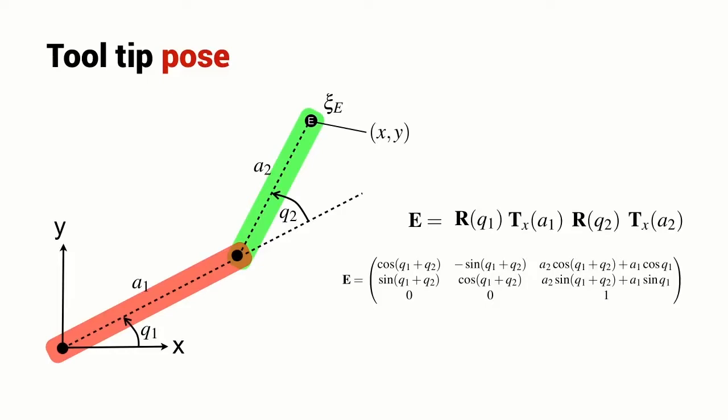We have an expression E, which is the homogeneous transformation which represents the pose of the robot's end effector. And we looked at this in the last lecture.